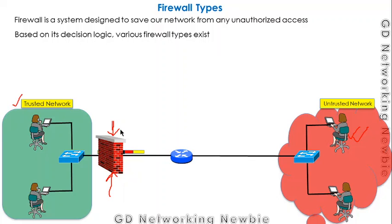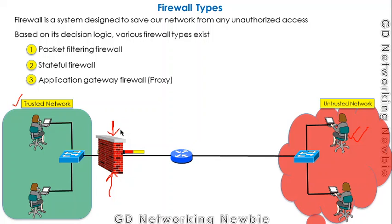The first type of firewall is the packet filtering firewall. The second is the stateful firewall. The third is the application gateway firewall, also known as the proxy firewall. There are other types as well, but in this video we are discussing these three main ones.